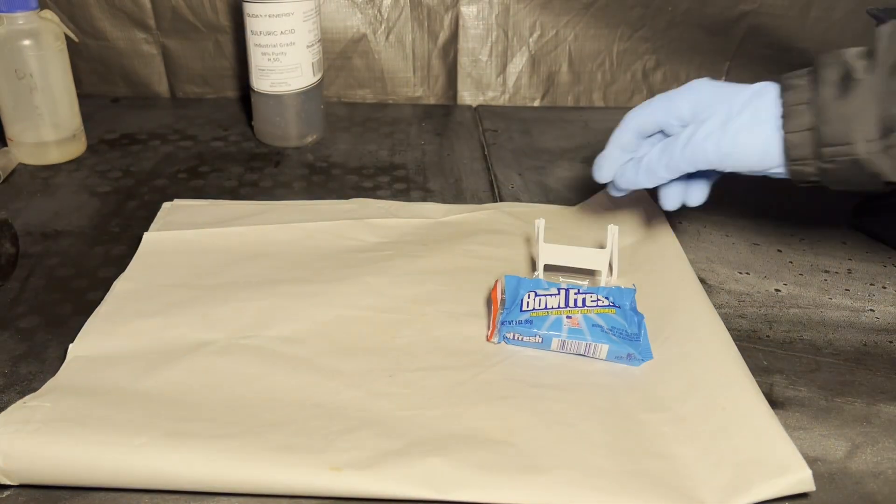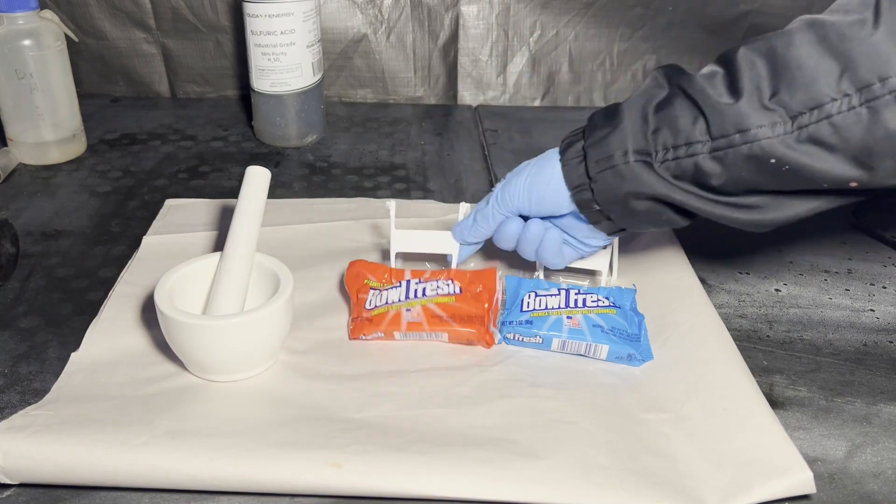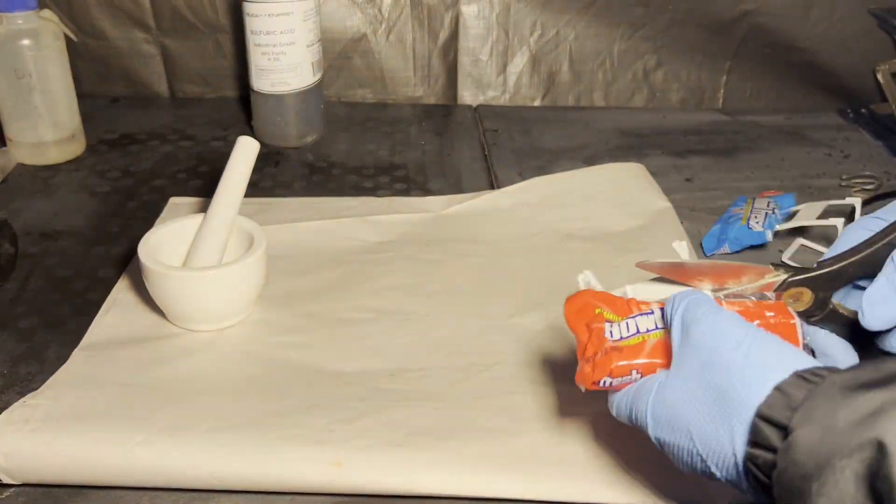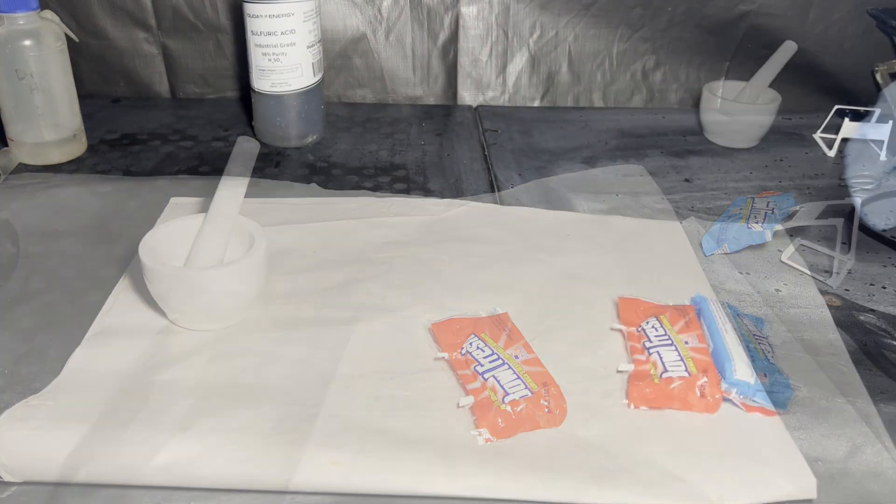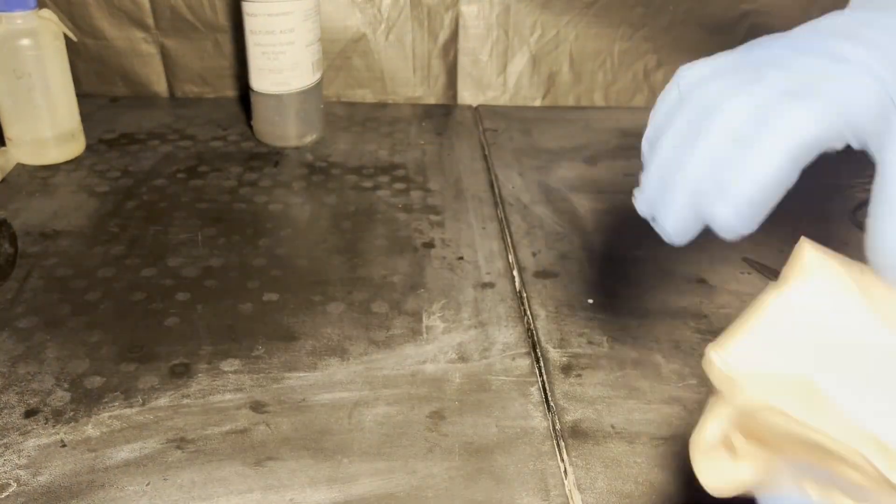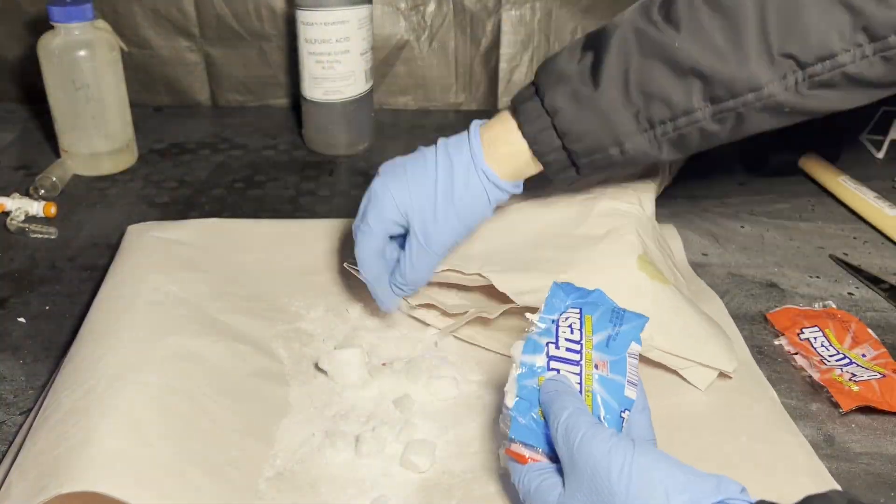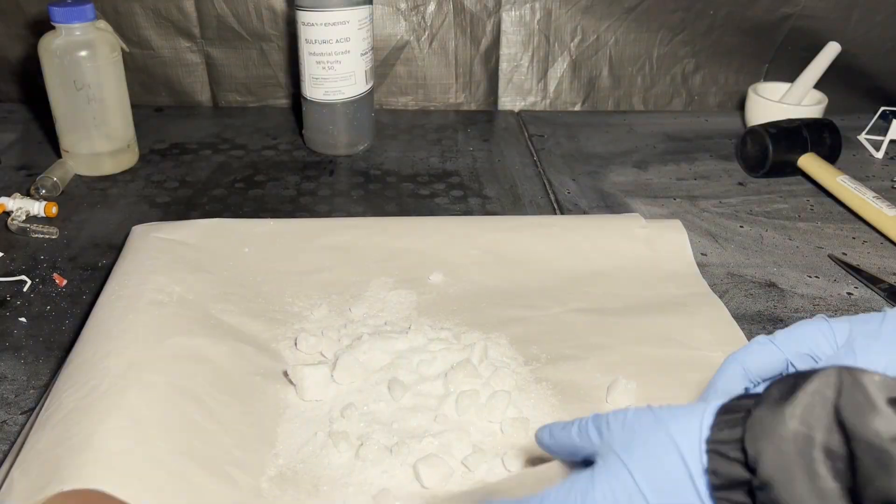I'm using two of these toilet deodorizers I got from Walmart for like $1.30 each for the second run. I used one for the first run. They have this annoying plastic hangy thing that I need to remove, and it's all in one solid chunk, so I have to crush it up. I do this by wrapping it in packing paper and bashing it with a mallet.